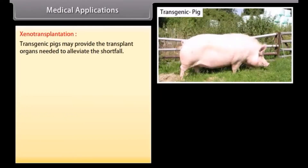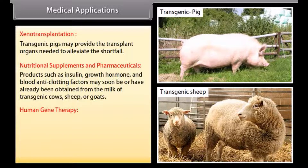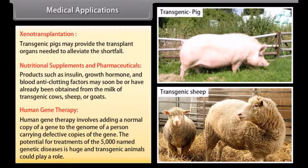Medical applications include xeno-transplantation, where transgenic pigs may provide the transplant organs needed to alleviate organ shortfalls. Nutritional supplements and pharmaceuticals such as insulin, growth hormone, and blood anti-clotting factors may soon be or have already been obtained from the milk of transgenic cows, sheep, or goats. Human gene therapy involves adding a normal copy of a gene to the genome of a person carrying defective copies, with the potential for treatment of the 5,000 named genetic diseases.